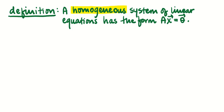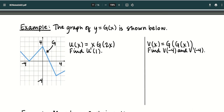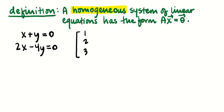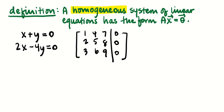Now let's talk about homogeneous systems. A homogeneous system of linear equations has the form AX equals zero. Going back to when you first learned about systems in algebra class, you might have had x + y = 0 and 2x − 4y = 0. Or in terms of an augmented matrix, something like 1, 2, 3 / 4, 5, 6 / 7, 8, 9 augmented with zero, zero, zero. In the next two videos, we're going to be really interested in solving homogeneous systems.